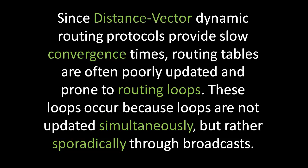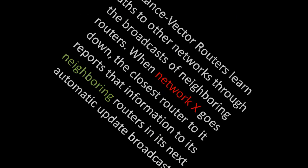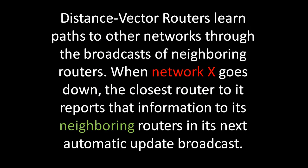These loops occur because routing tables are not updated simultaneously, but rather sporadically through broadcasts. Distance vector routers learn paths to other networks through the broadcast of neighboring routers. When network X goes down, the closest router to it reports that information to its neighboring routers in its next automatic update broadcast.